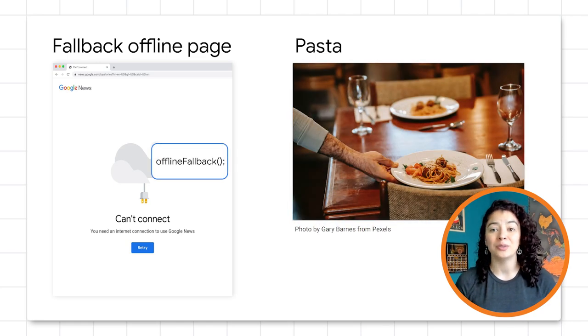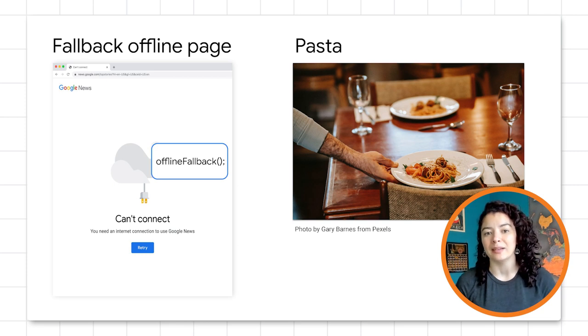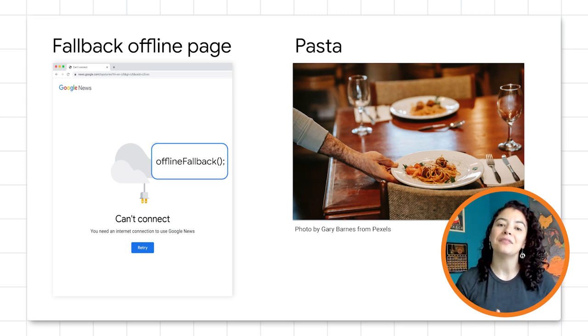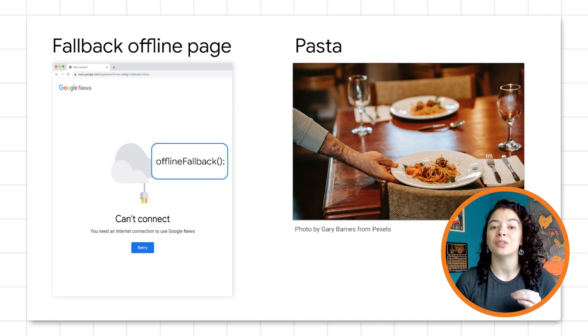Or you can go to a restaurant and order the bowl of pasta you want, all prepared for you. That would be like using the Workbox recipe. You don't have that much flexibility, but you'll be done with your task with one line of code. Let me show you how to implement options two and three — the fallback page, not the pasta.